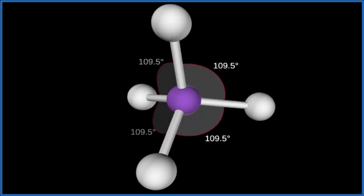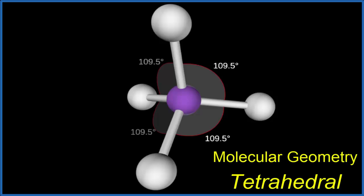So the molecular geometry for CH4 is tetrahedral. Let's go back to our Lewis structure.